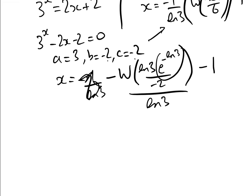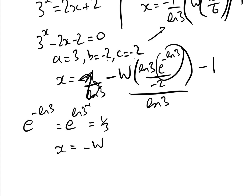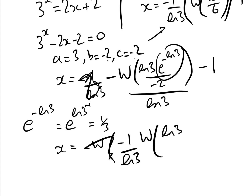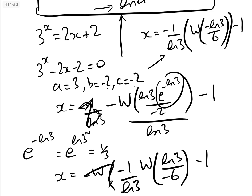We need to simplify e to the minus log 3. That equals e to the log of 3 to the minus 1, which equals one third. So we get x equals minus 1 over log 3 times W of log 3 over minus 6 — since minus 2 times one third is minus one sixth, giving log 3 over minus 6 — minus 1. This is exactly the same answer we got in the other video, confirming our general formula is correct.